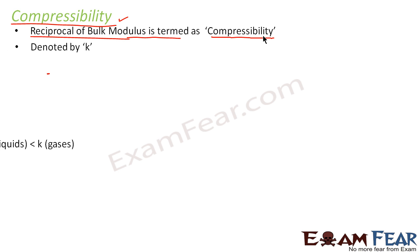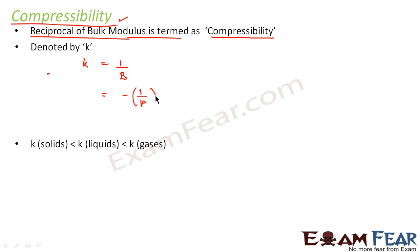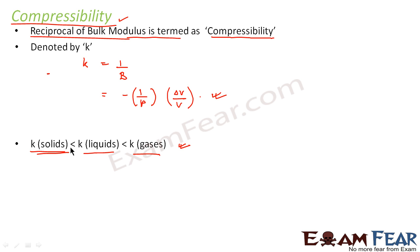Compressibility is denoted by small k, and it is given by k = 1/B = −(1/P)(ΔV/V). Since bulk modulus is maximum for solids, and compressibility is the reciprocal of bulk modulus, compressibility is the least for solids, then for liquids, and then for gases. In real life, it is easier to compress a gas compared to a solid because the compressibility of a solid is very low.